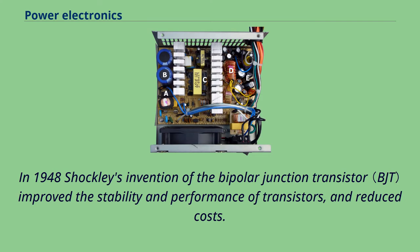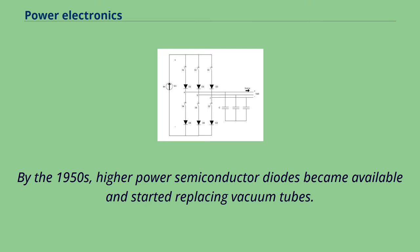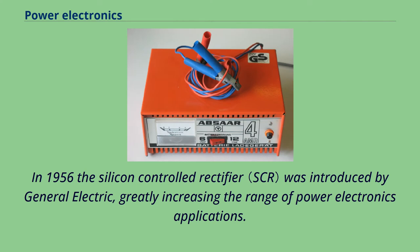In 1948, Shockley's invention of the bipolar junction transistor improved the stability and performance of transistors and reduced costs. By the 1950s, higher-power semiconductor diodes became available and started replacing vacuum tubes. In 1956, the silicon-controlled rectifier was introduced by General Electric, greatly increasing the range of power electronics applications.